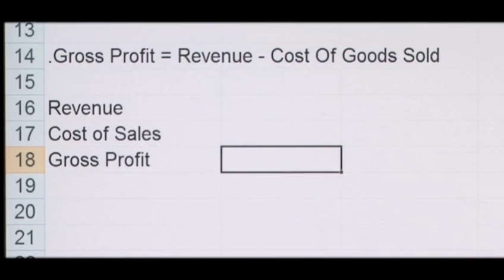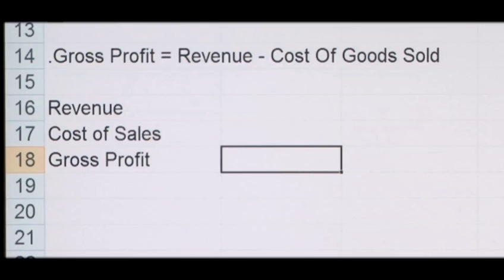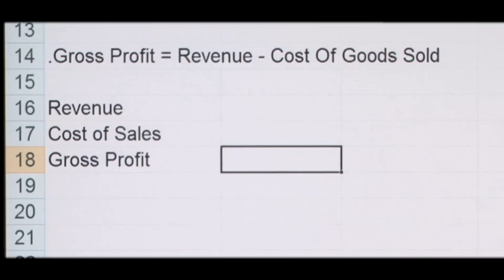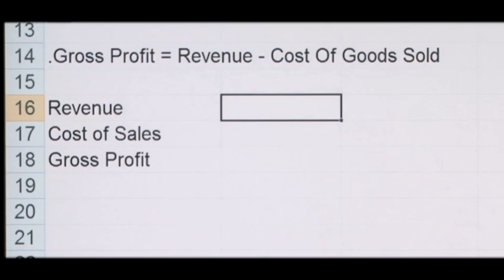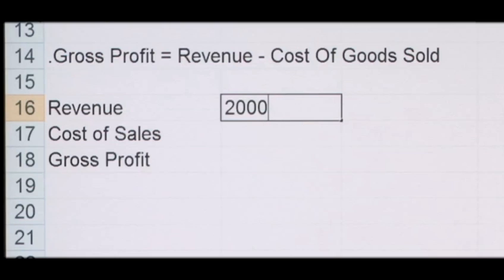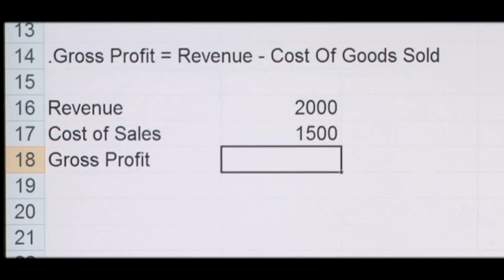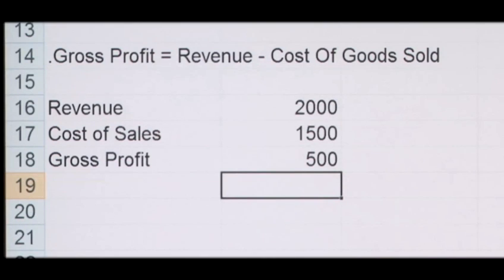So to recap: gross profit is simply a company's revenue minus its cost of goods sold. It's the residual profit after selling a product or service and deducting all the costs associated with this production and sale. Gross profit is very important because it indicates how efficiently management have used the labour and supplies in the production process, and it's used to calculate the gross profit margin. For example, the company here generated a revenue of two thousand pounds, with cost of sales of fifteen hundred pounds, giving a gross profit of five hundred pounds.